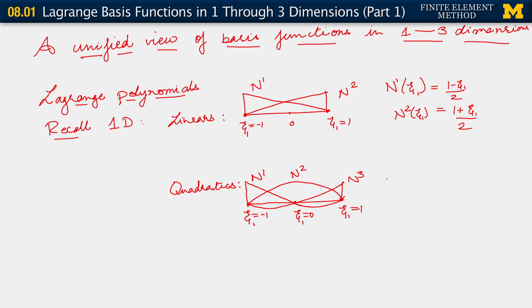And the expressions for them were n1 function of c1 is 1 minus c1 times c1 over 2. N2 equals 1 minus c1 square. And then n3 is 1 plus c1 times c1 divided by 2.